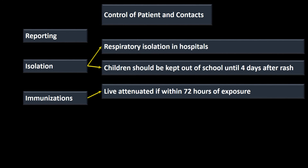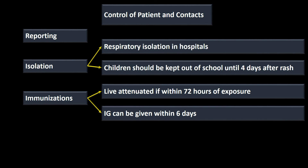For immunization post-exposure: within 72 hours we give the live attenuated MMR vaccine. Attenuated means weakened — the vaccine is weakened enough that the immune system will win and produce antibodies, hopefully before the actual live virus takes hold. After 72 hours and within six days, we give immunoglobulin — plasma taken from people who already have the antibodies, concentrated down and injected to provide immediate passive protection.